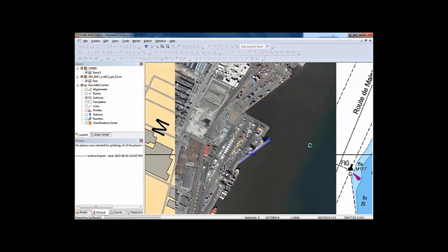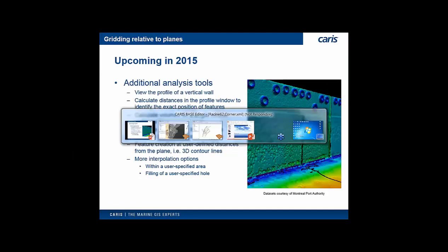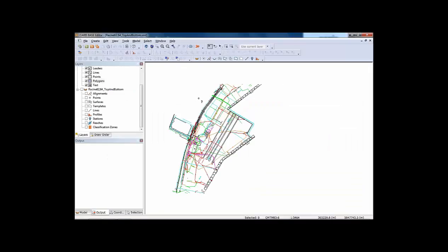Now, this only takes a few seconds to run, but in a public webinar, a few seconds seems like it takes a long time. So let's go and continue talking with a different data set. In the same area, the Montreal Port Authority provided us with an AutoCAD file with the model of the area. It has the location of the vertical walls like we showed before.